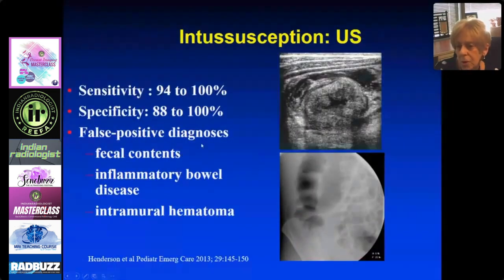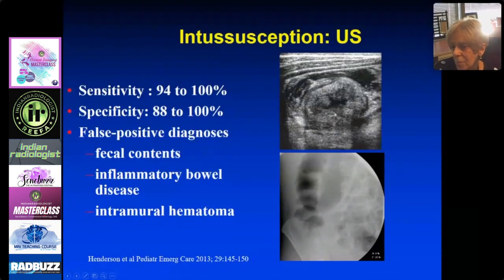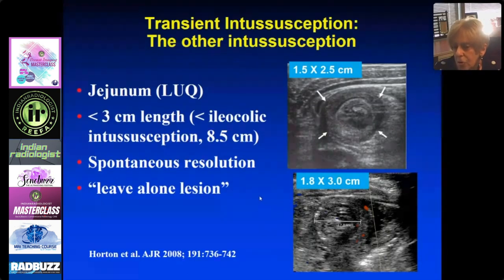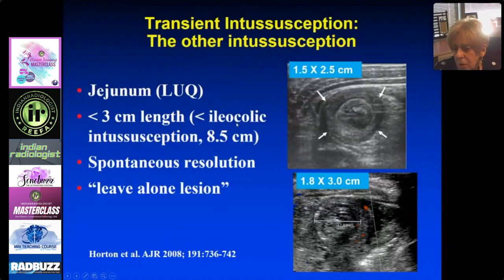Ultrasound factors that predict difficulty in reducing intussusception include: absent blood flow, a large amount of fluid in the central intussusception, trapped lymph nodes in the intussusception, and a lead mass. Sensitivity is 94 to 100%, and specificity up to 100%. Occasionally, fecal contents, inflammatory bowel disease, or hematoma will mimic intussusception. One patient with acute pain appeared to have intussusception, but enema revealed it was colitis.